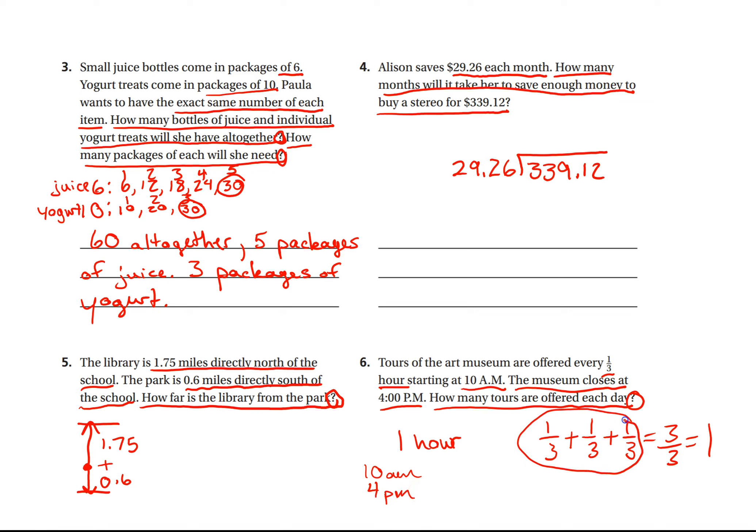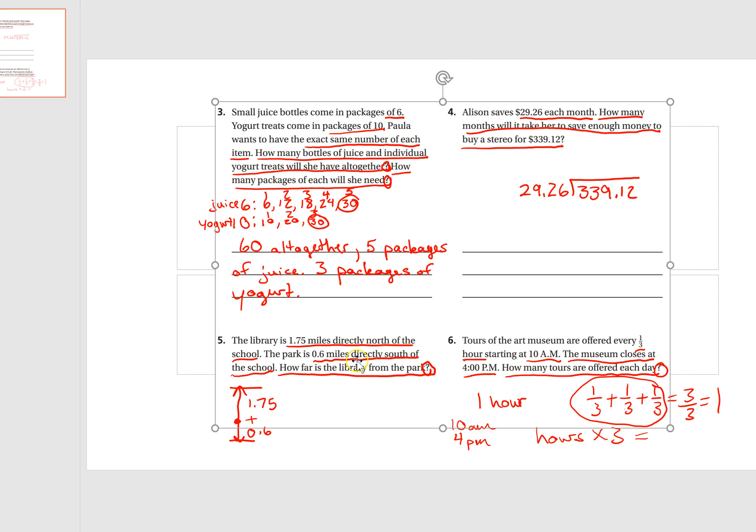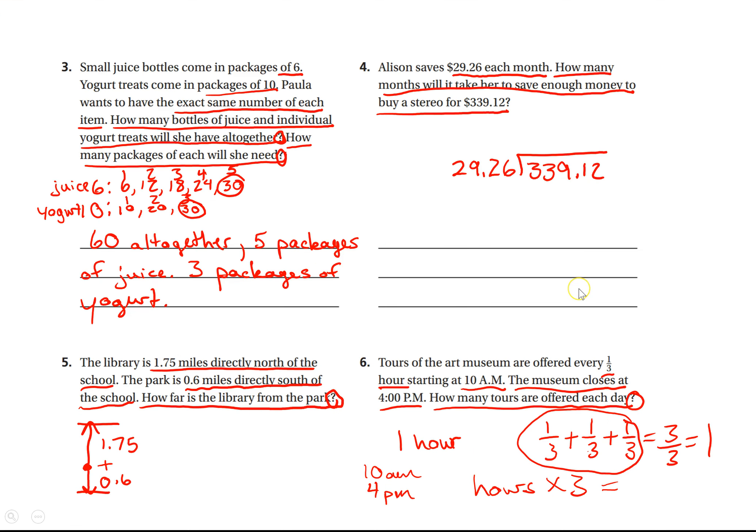And then each one of those hours is going to have three-thirds in it. So you're going to multiply that. How many hours you have times 3, because every one of these hours is going to have three-thirds in it. So that's how you're going to get your final answer. You're going to find out how many hours it's open. If it's open at 10 and closes at 4, how many total hours is that? Times three, because each hour is going to have one-third in it. And then that's going to give you your total number of tours that are offered each day. All right. If you have any questions, don't hesitate to raise your hand. Thanks for watching.